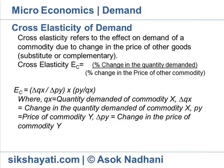Positive cross-elasticity of demand implies substitute goods, like tea and coffee, red pencil and blue pencil, coke and Pepsi, etc. Negative cross-elasticity of demand exhibits complementary goods, like car and petrol, tea and sugar, pen and ink, etc. Zero cross-elasticity implies that goods are not related to each other.